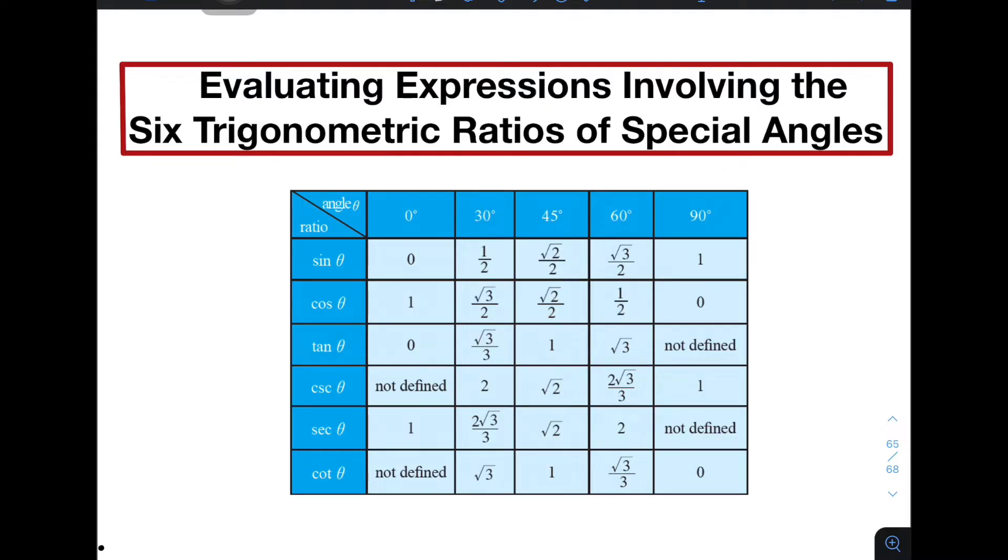So we already have the video for the derivation on how to get the value of sine 30 degrees, cosine 30 degrees, or in other words, the exact value of the 6 trigonometric ratios of special angles. And as you can see, we have a table of values for the 6 trigonometric ratios, including their exact values.